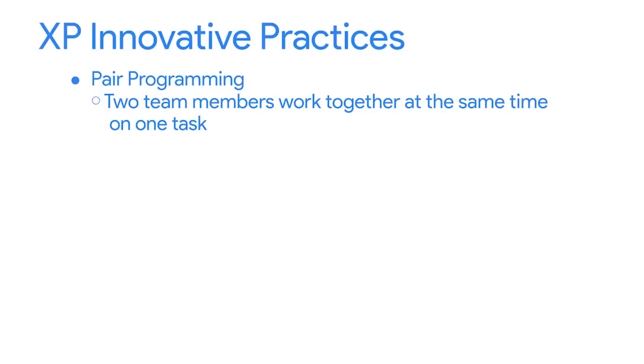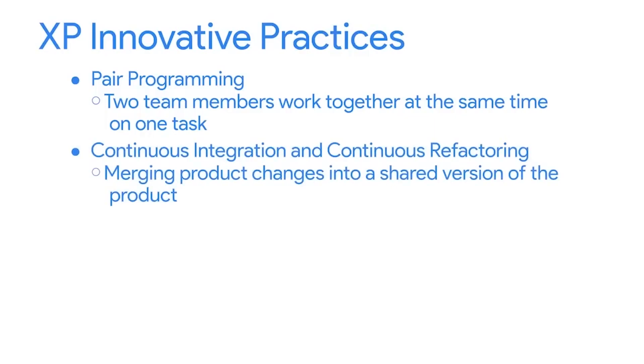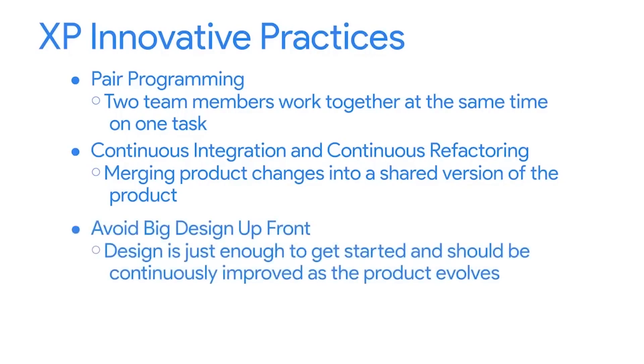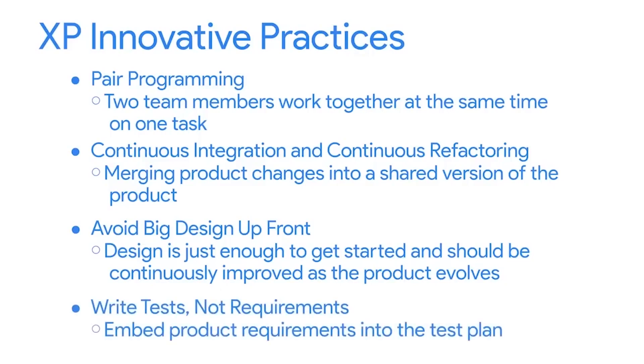XP features some other innovative practices used across many Agile teams regardless of the specific methodology. First, there's pair programming, where two team members work together at the same time on one task — usually in the same physical location, but it can happen remotely too with digital collaboration tools. Another practice is continuous integration and continuous refactoring — merging product changes into a shared version several times a day to get quick feedback on quality. Then there's 'avoid big design up front,' meaning the design should be just enough to get started and continuously improved as the product evolves. And finally, there's 'write tests, not requirements' — instead of writing a product requirements document and then a test plan, your test plan serves two purposes: telling the team what to build, and comparing what they built to what was supposed to be built.